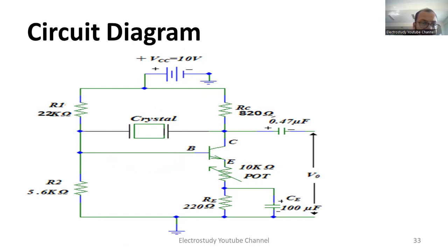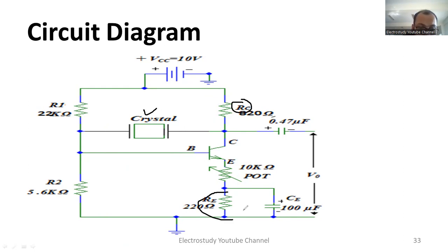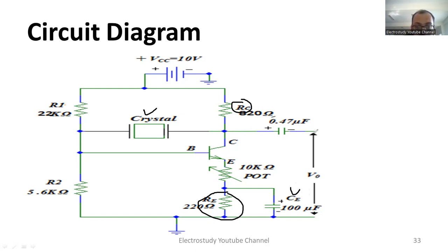Now we have to select the passive components. The crystal we are supposed to select, and for the biasing voltage VCC we require a separate RPS. We need the collector resistor RC and we should have one RE. There is also a bypassing capacitor CE, and the output will be collected at the capacitor terminal.